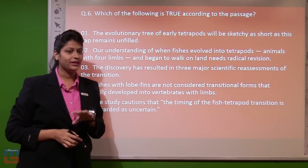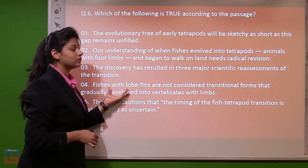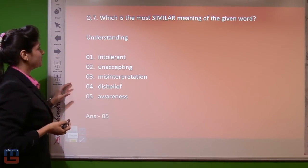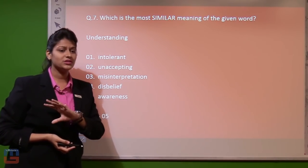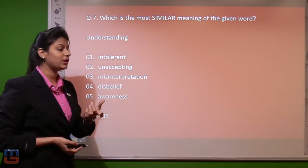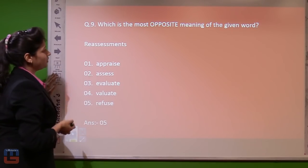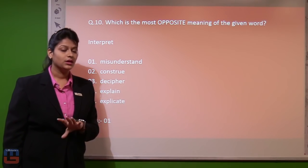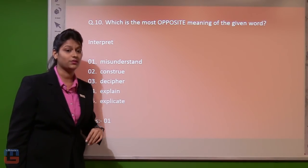Question number six asks: which of the following is true according to the passage? Again, you have to read the passage very thoroughly. Moving to question number seven — there are four vocabulary-based questions. For these, we have to read the sentence where each word has been used. The words to discuss are: understanding, evidence, reassessments, and interpret. These were the ten questions. Now we will go back to the passage and skim out these key points.